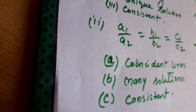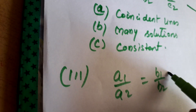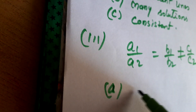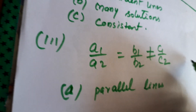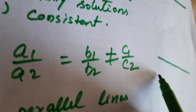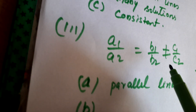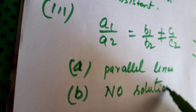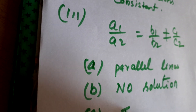Now the third condition: if a1 upon a2 is equal to b1 upon b2, but not equal to c1 upon c2, then the graph will be parallel lines. The two lines will not intersect at any point. They will have no solution, and since they have no solution, they are inconsistent.